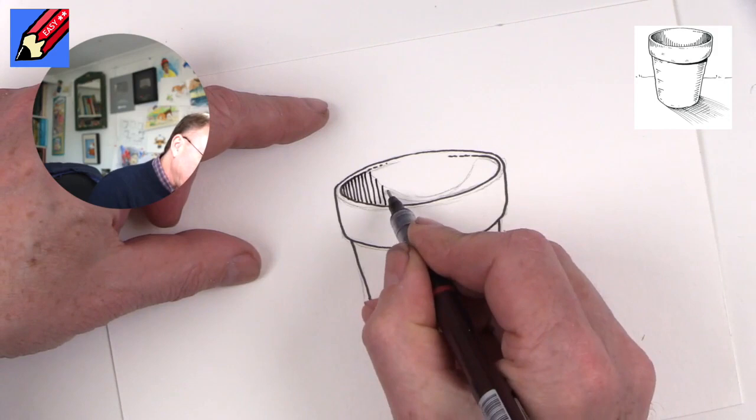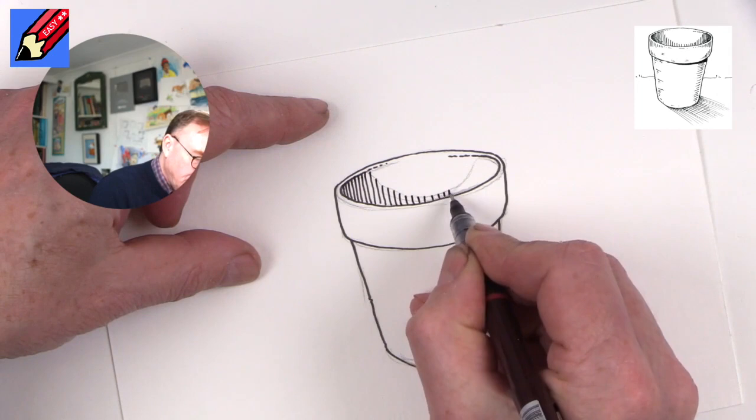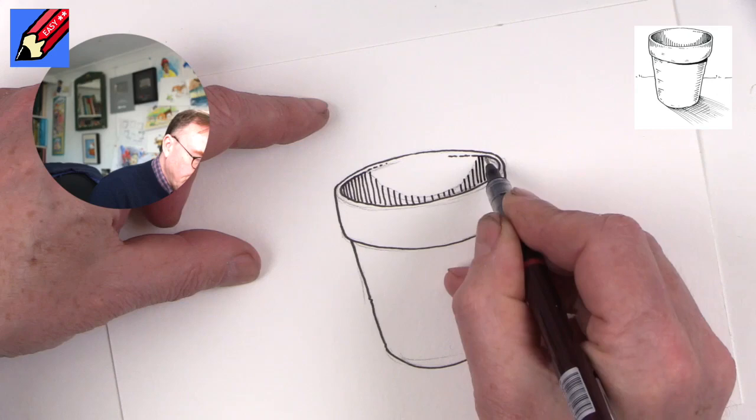You can maybe make those lines slightly wider apart in the middle, and then as you come to the edge you can make them closer together again, and that makes them look a bit darker.